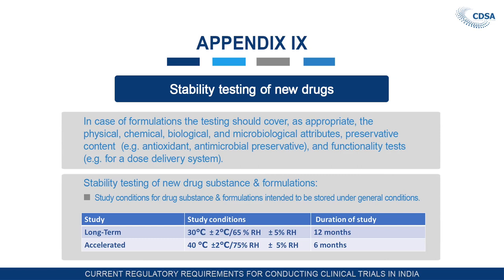For stability testing of new drug substance and formulation intended to be stored under general conditions — room temperature or 25°C — the long-term or real-time study condition is 30°C ±2°C with relative humidity 65% ±5%, conducted for a duration of 12 months. For accelerated conditions, it is 40°C ±2°C with relative humidity 75% ±5% for 6 months. If at any time during the 6-month testing under accelerated storage conditions changes occur causing the product to fail in complying with prescribed standards, additional testing under intermediate storage conditions should be conducted and evaluated against significant change criteria.